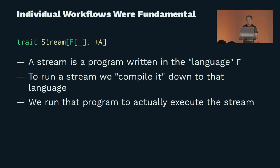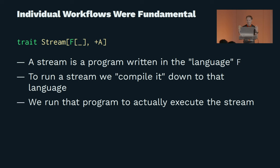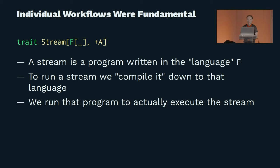Some streaming libraries have a signature that looks like this: you have a stream parameterized on an F and an A. What these libraries describe is: a stream is a program written in this language F. To actually run this streaming program, you can't just run the stream itself — you've got to compile the stream down to this F thing, and then you can actually run it. So you've got these two different layers of interpretation.